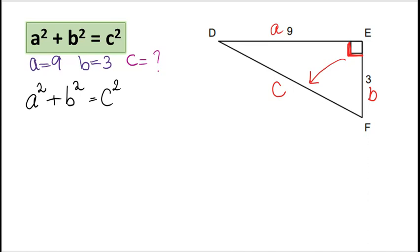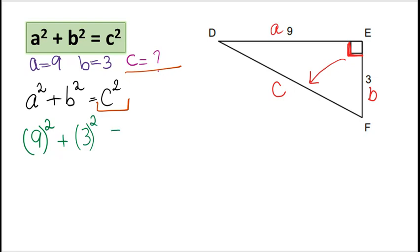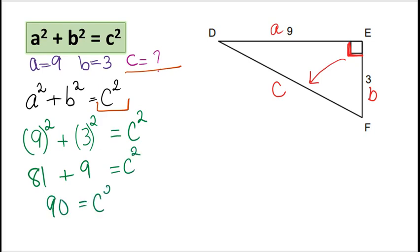At this point, we usually manipulate our formula if the variable we're looking for is not already isolated. But we're looking for c and c is already isolated, so we don't need to do any manipulation. All we do is plug in the numbers and calculate c. So 9 squared plus 3 squared equals c squared, which gives us 81 plus 9 equals c squared. That is 90 equals c squared.